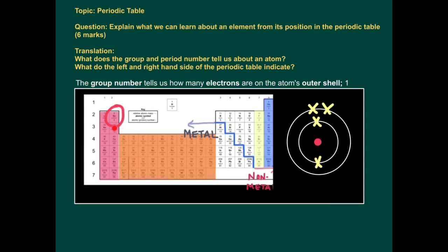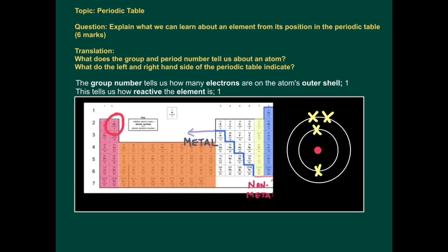Let's for this example look at beryllium, because you might be asked to do this for a specific element. The group number tells us how many electrons are on the atom's outer shell. So beryllium is in group two, it has two electrons on its outer shell. This tells us how reactive the element is.